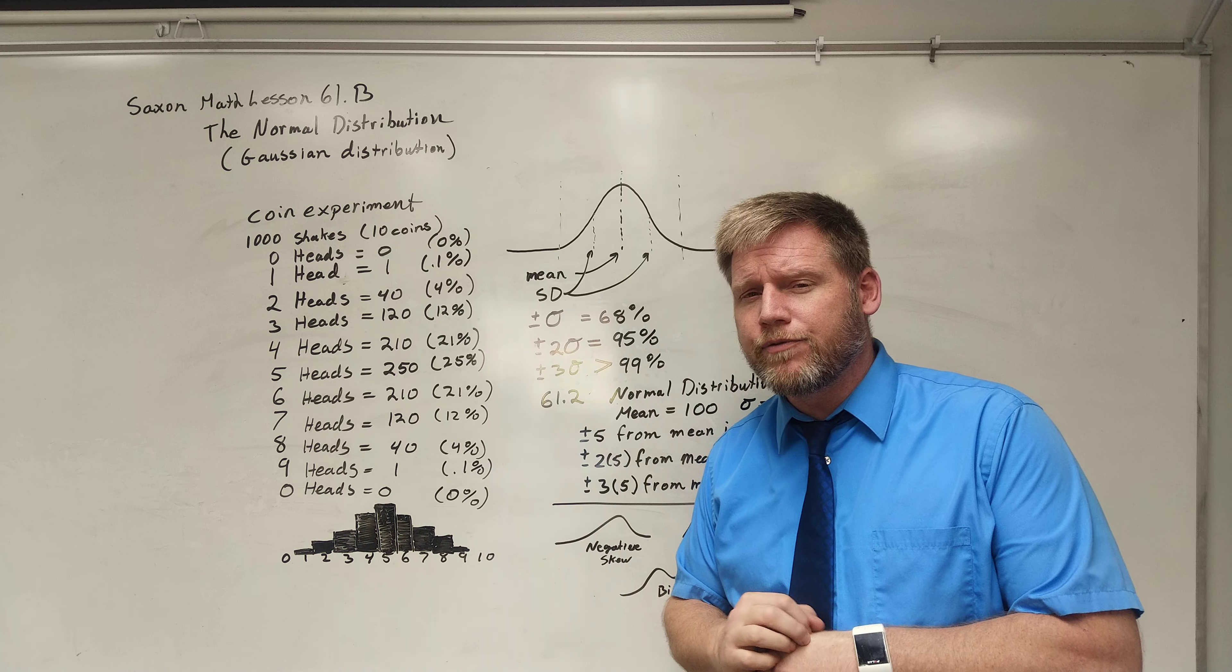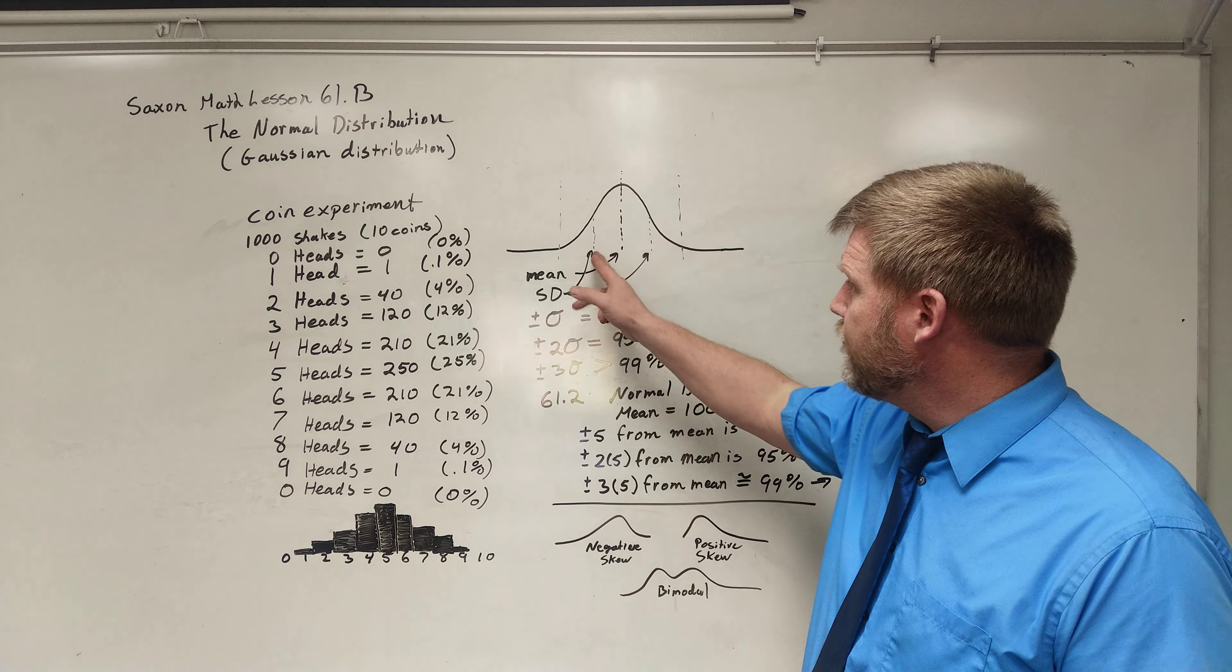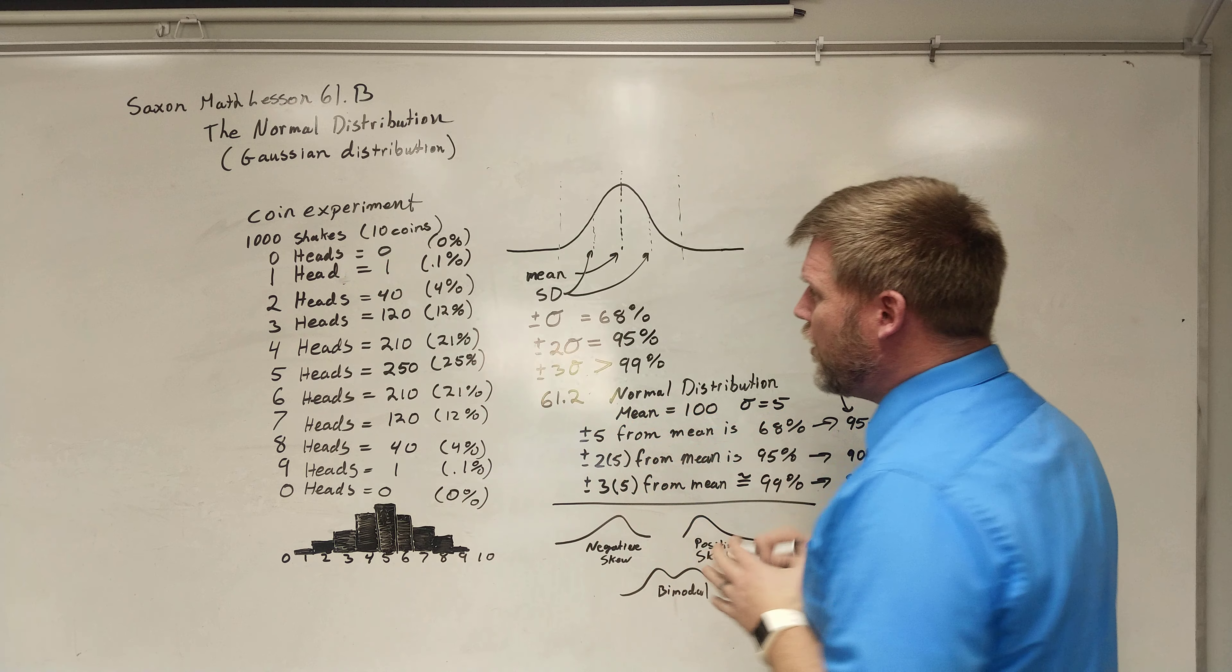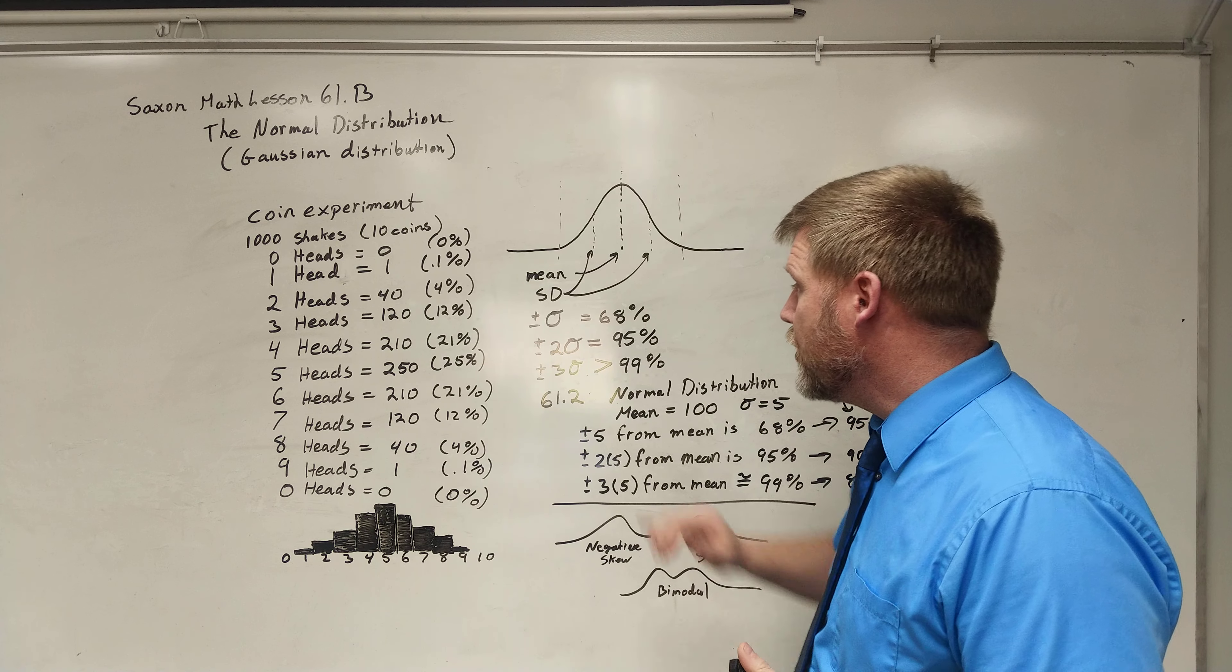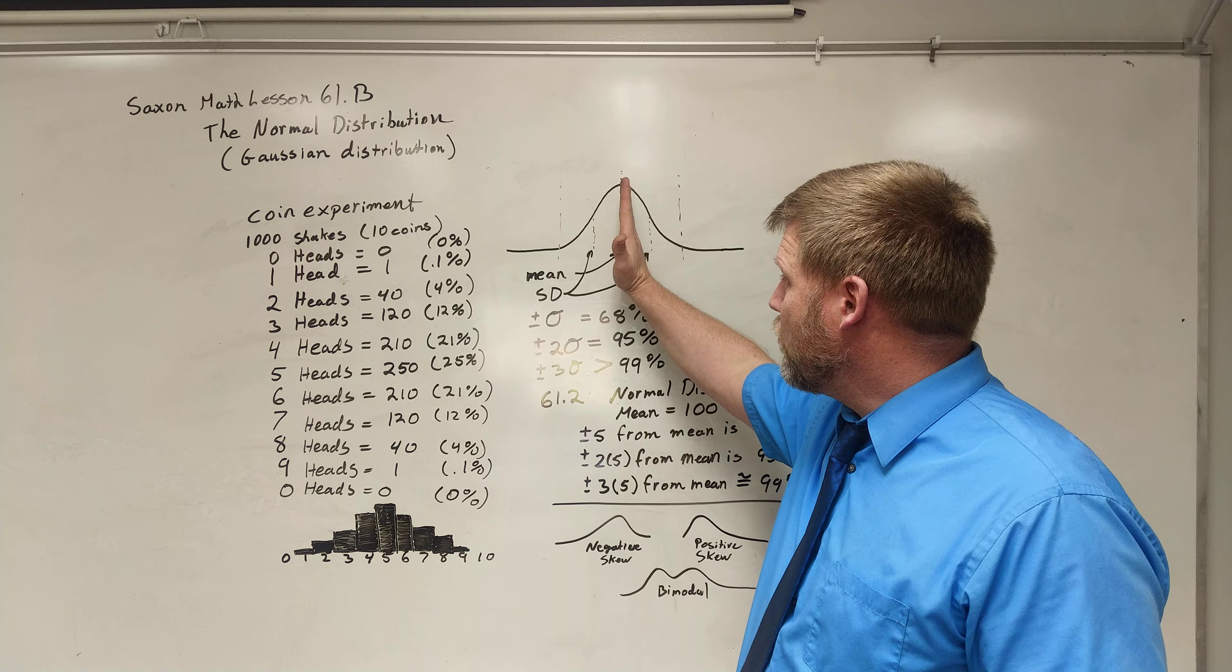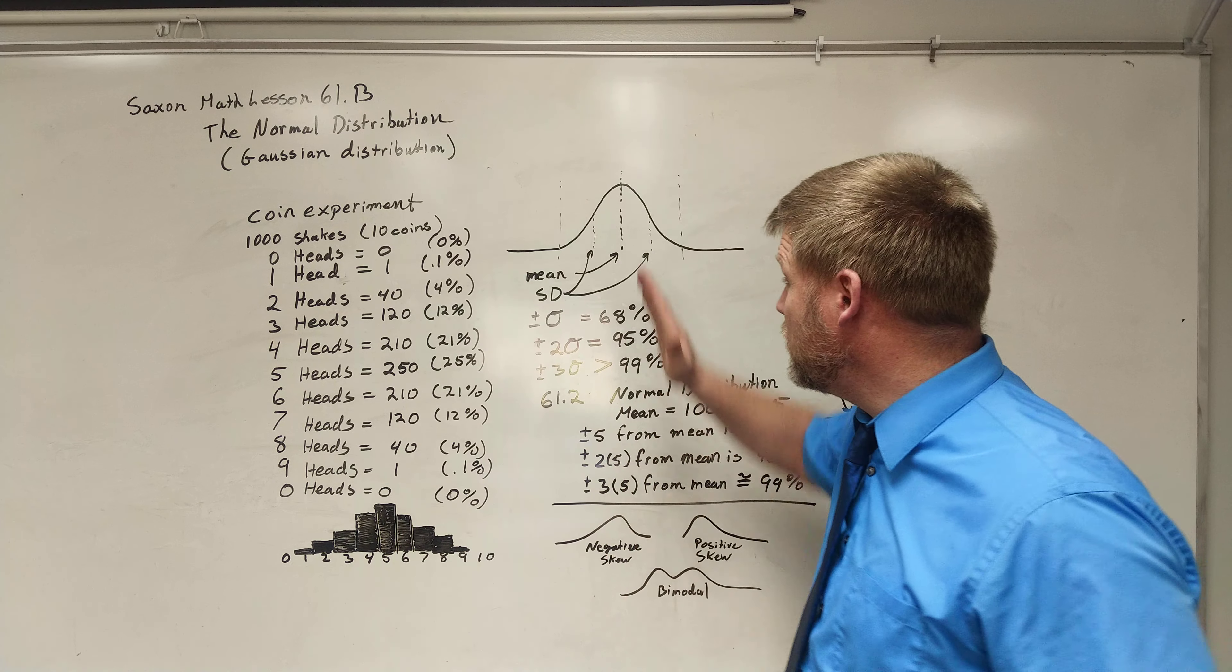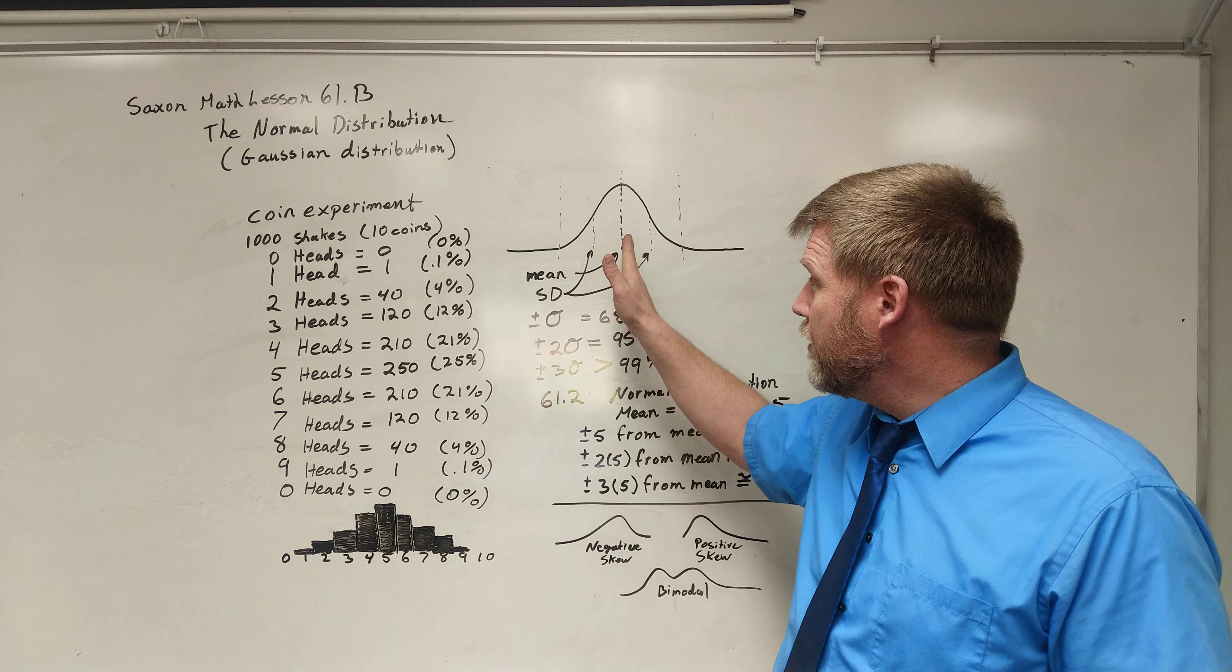Now, we already talked about standard deviations in the first video for today, for 61.a. You realize that this curve, or bell curve is what it's called, could actually be squashed to be taller or spread out to be further depending on the standard deviation. But a couple of things are going to be true in a normal distribution within one standard deviation of the mean. There's the mean right in the middle, right? And that's correct because there's as many above as below data points, right? That's the average, the number in the middle.